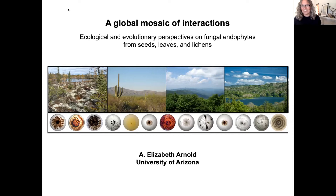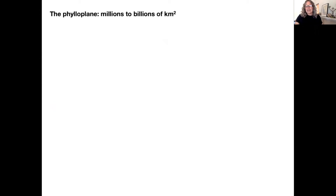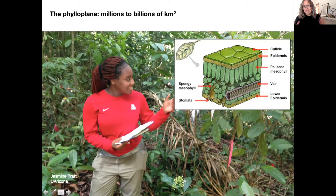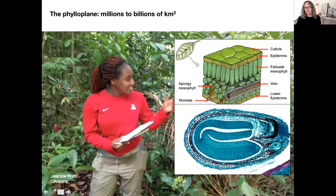What I'd like to do today is start with thinking about the phylloplane — the leaf surface — which is often acknowledged as the largest biotic habitat for microbes on the planet. However, if we do a deep dive into any of the leaves around us, we see an immense internal surface area — the surface of each cell and the spaces between them — far larger than the phylloplane itself, encompassed by a tremendous number of microbes, including fungal endophytes.